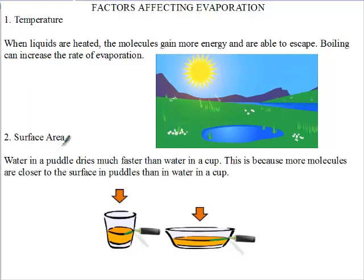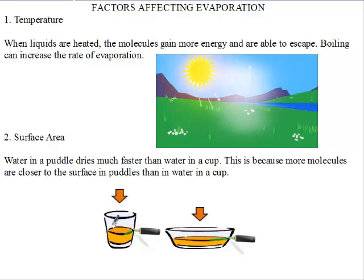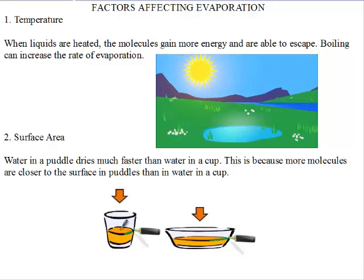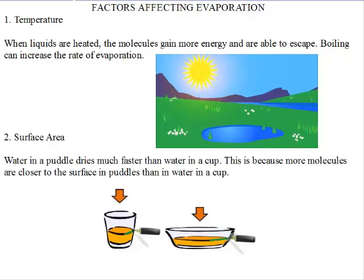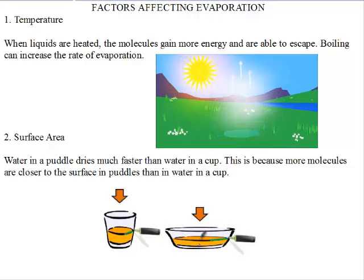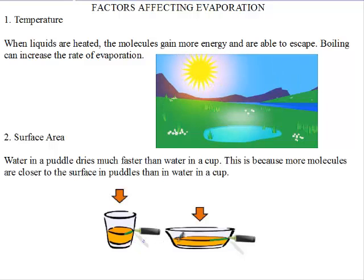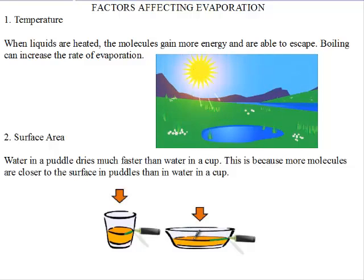Also, surface area. When we say the surface area, we're talking about how many molecules are closer to the surface. In this glass here, we have just a little molecules closer to the surface; all the rest are deeper. In this dish, the dish is wide, therefore we have more molecules closer to the surface, and the depth of the water is much shallower than in the glass. So the molecules that are closer to the surface are greater, and they will gain more energy and evaporate faster than the few molecules that are exposed in this glass.